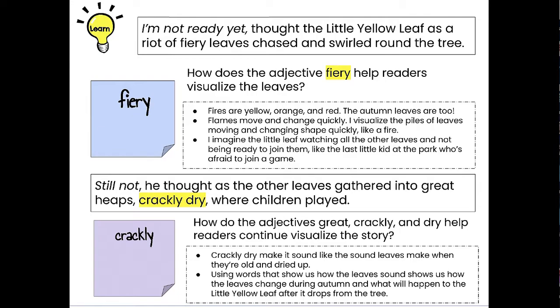I'm going to read this sentence from The Little Yellow Leaf: 'I'm not ready yet, thought The Little Yellow Leaf, as a riot of fiery leaves chased and swirled around the tree.' How does the adjective fiery help readers visualize the leaves? Well, fires are yellow, orange, and red — and autumn leaves are too. Flames move and change quickly. I visualize the piles of leaves moving and changing shape quickly like a fire. I imagine the little leaf watching all the other leaves and not being ready to join them, like the last little kid at the park who's afraid to join a game.